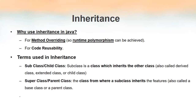Method overloading is the concept of having more than one method with the same name within the same class, but with a different parameter list. By means of inheritance, we can implement method overriding. Method overriding is also known as runtime polymorphism or dynamic polymorphism. Method overloading is compile-time polymorphism or static polymorphism, because it is resolved when we compile the program. Method overriding is resolved at runtime.